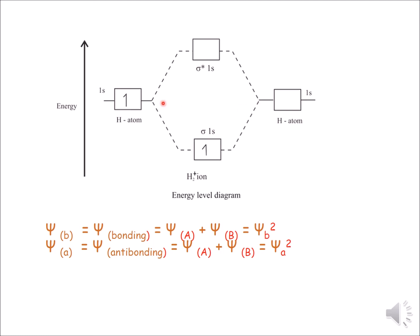By the combination of these two atomic orbitals, two molecular orbitals form. The bonding molecular orbital is labeled σ1s, and the anti-bonding molecular orbital is labeled σ*1s — the star sign always indicates an anti-bonding molecular orbital. According to the aufbau principle, the one electron enters the lower energy orbital, which is σ1s. This is the energy level diagram of the H2+ molecule.